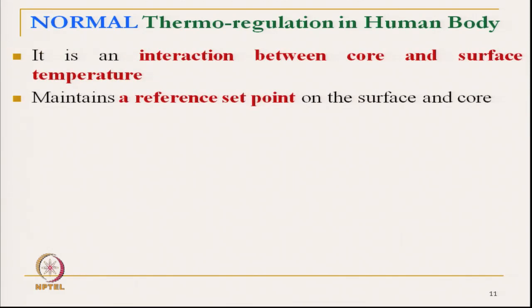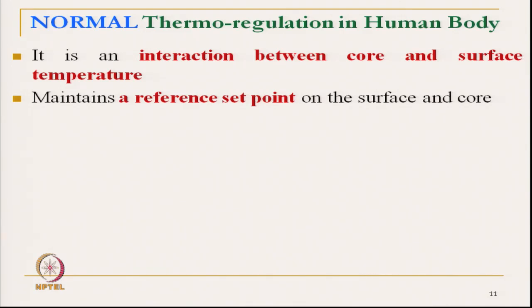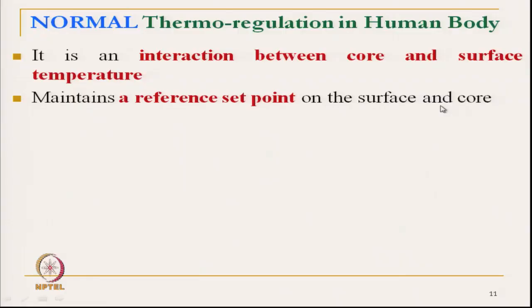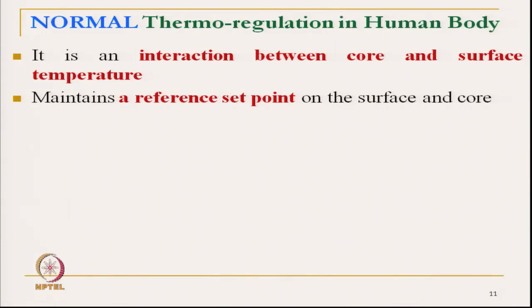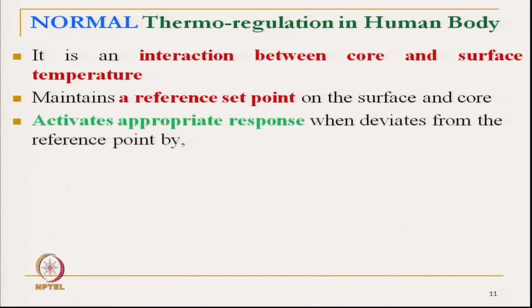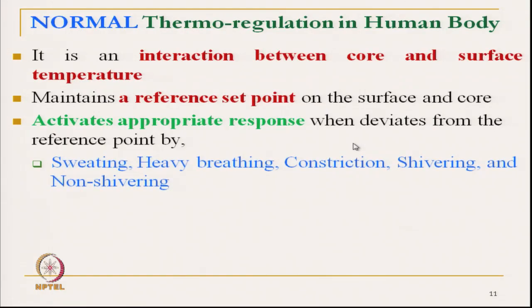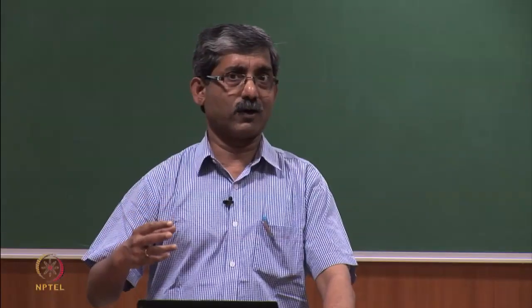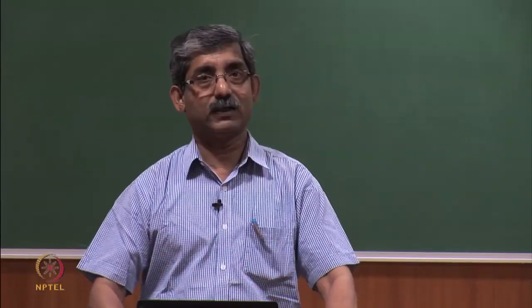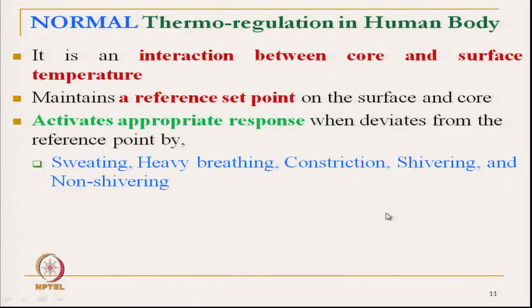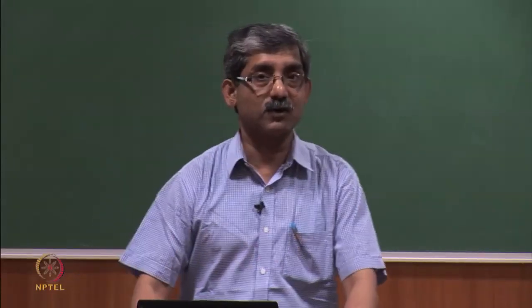Thermoregulation of the body is an interaction between core and surface temperature, maintaining reference points on the surface and the core. It activates appropriate responses when deviating from the reference point — by sweating, heavy breathing, vasoconstriction, vasodilation, shivering, or non-shivering thermogenesis. Our body physiology always tries to maintain the balance. In case of any deviation, one or many of these physiological activities get activated.